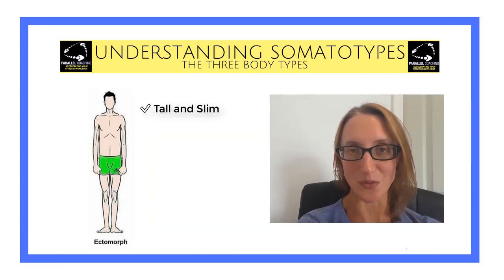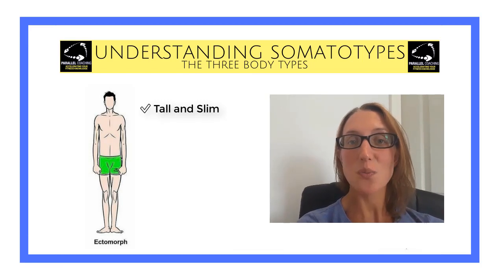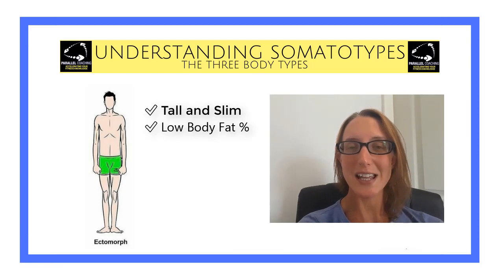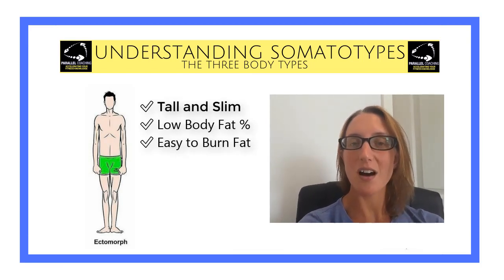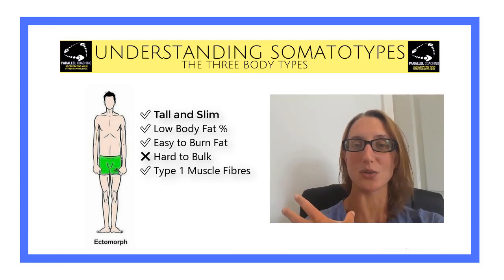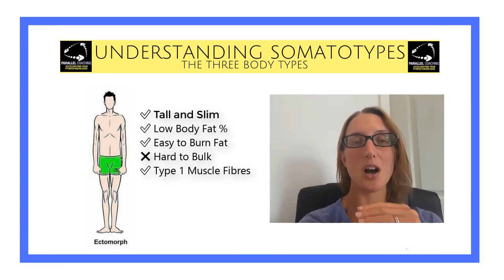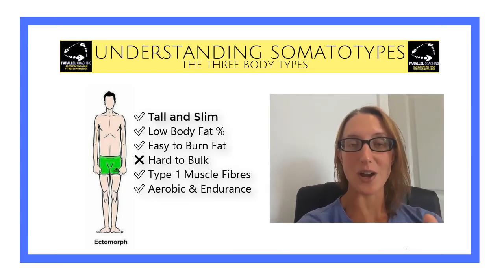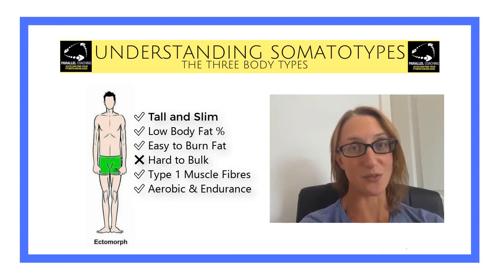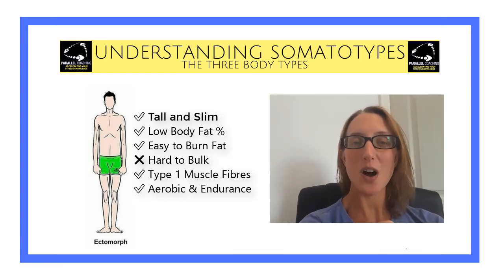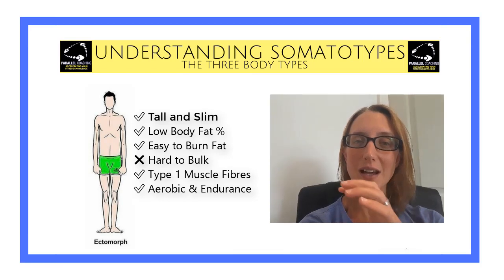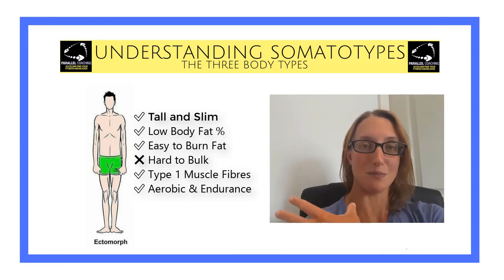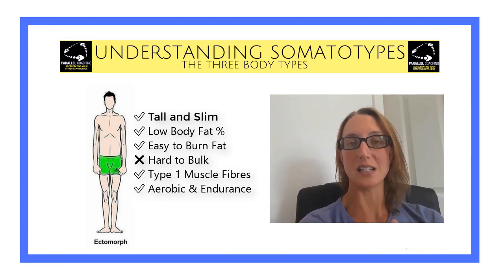The first one is ectomorphs. These are tall and slim. With an ectomorph they generally have a very low body fat percentage, they find it easy to burn off fat, but they also find it hard to build bulky muscle. The reason for that is because they have predominantly type 1 muscle fibers, which means they're great at aerobic training and endurance events. However, type 1 muscle fibers don't increase in diameter as much, so they don't have as much capability to gain muscle mass and bulk.